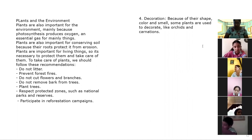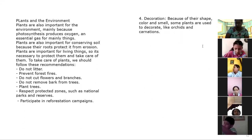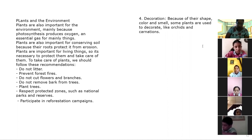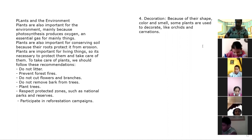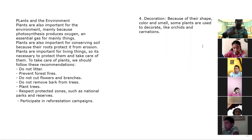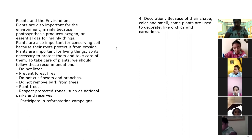Por ejemplo, muchos pájaros construyen sus nidos en los árboles y muchos insectos viven en hojas, en tallos o en el tronco de los árboles. Las plantas son importantes porque ellas proveen el oxígeno que los animales necesitan para respirar. Y es muy importante cuidar las plantas desde que ellas son necesarias para la sobrevivencia de muchos seres vivos. Una manera de cuidarlas es plantando más árboles y creando zonas de protección.